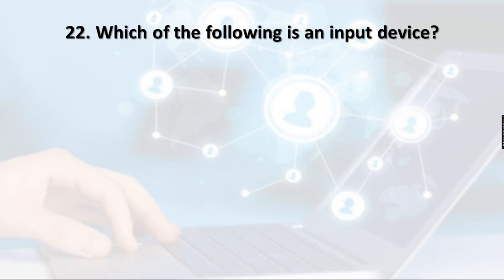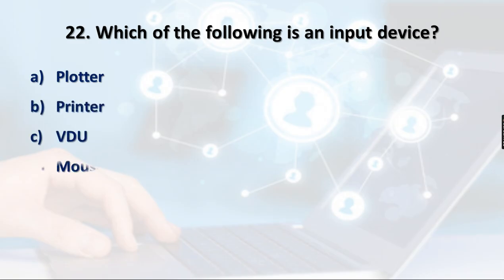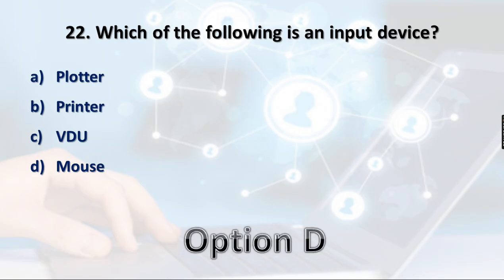Question 22: Which of the following is an input device? Options: Plotter, Printer, VDU, Mouse. VDU is an output device as just discussed. Printer is also an output device used to take printouts in hard copy. Plotter is also an output device. Mouse is the only input device among these, so option D is the right answer.